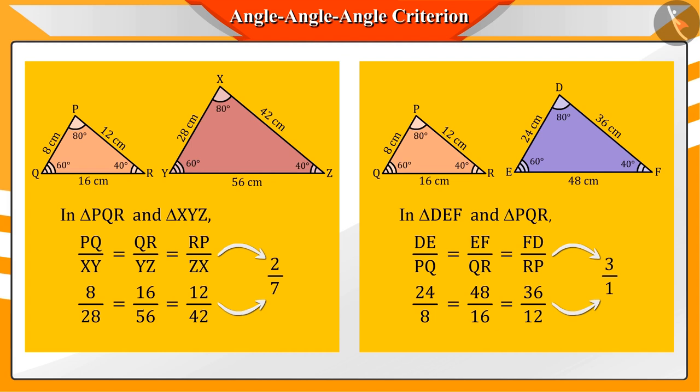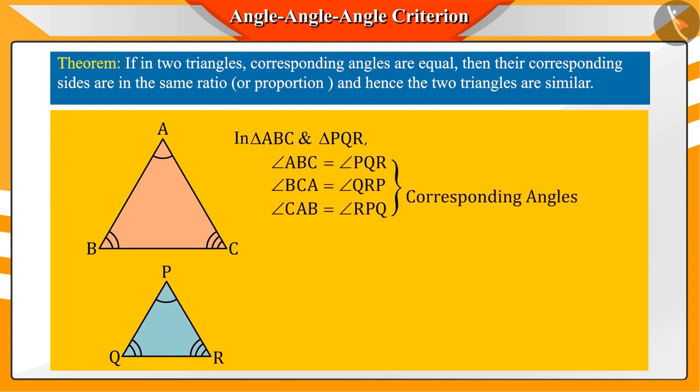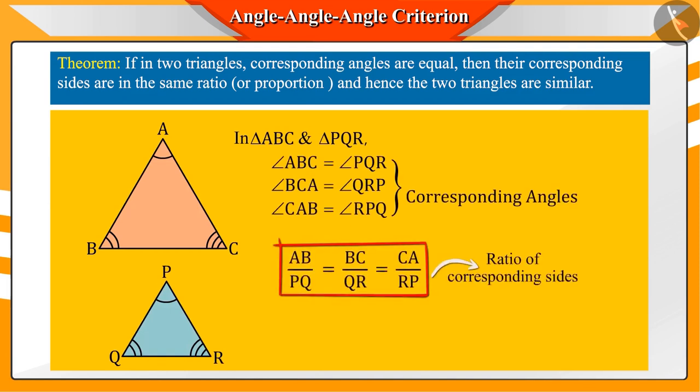This activity teaches us about similarity of two triangles. This activity leads us to the conclusion that if in any two triangles, if the corresponding angles are equal, then their corresponding sides are in the same proportion or ratio and hence the two triangles are similar.